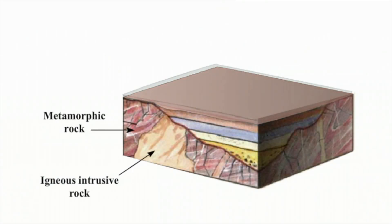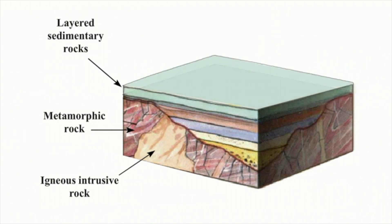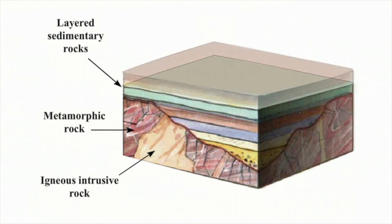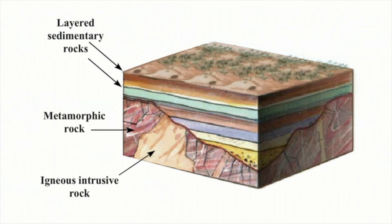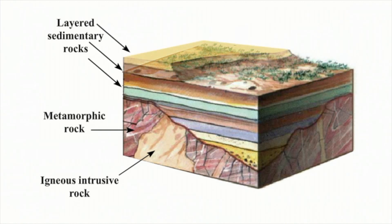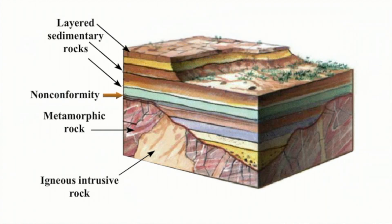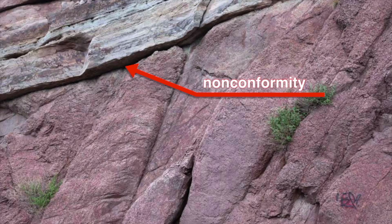A nonconformity arises when sedimentary rocks are deposited over igneous or metamorphic rocks. This type of formation represents significant change in the geological environment, from volcanism to periods dominated by deposition and sedimentation. A nonconformity is relatively easy to recognize since it is distinguished by younger sedimentary rocks above older igneous rock.